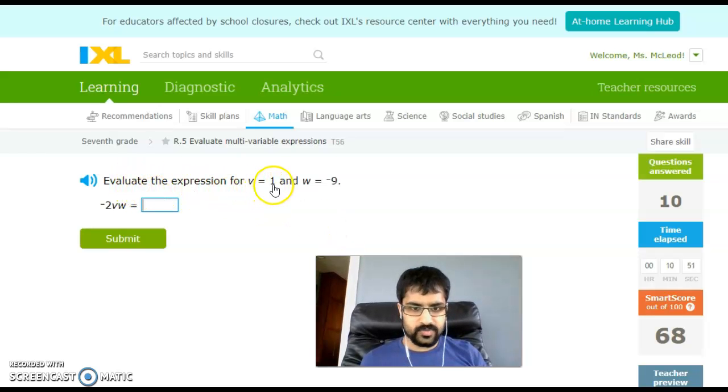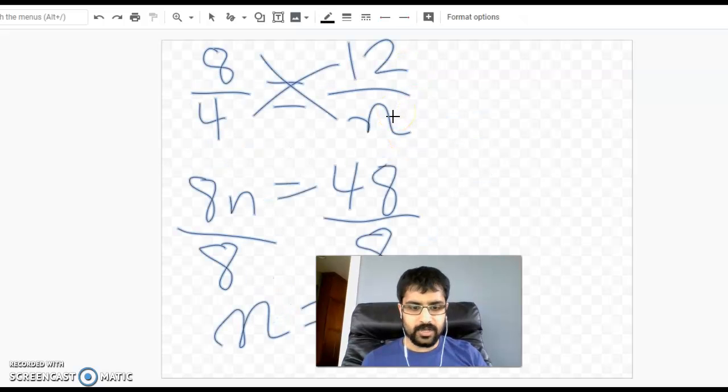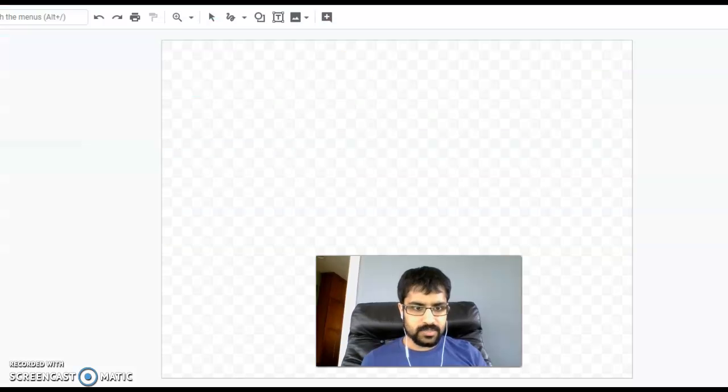Evaluate the expression for V equals 1 and W equals negative 9. I've got negatives, and I've got a number in here. Doesn't change anything but the process. You still plug in those other values first.